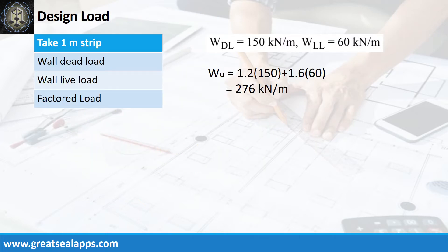The wall footing carries a uniform dead load of 150kN per meter and uniform live load of 60kN per meter for a factored uniform load of 276kN per meter.